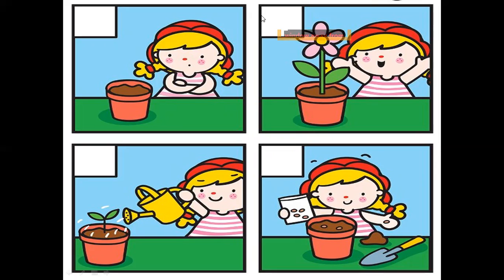This one is first — she is taking soil into the pot. Then, after that, she is putting a seed in that pot. After that, she is watering the plant. Then finally, it grows a flower. So this is the sequence.